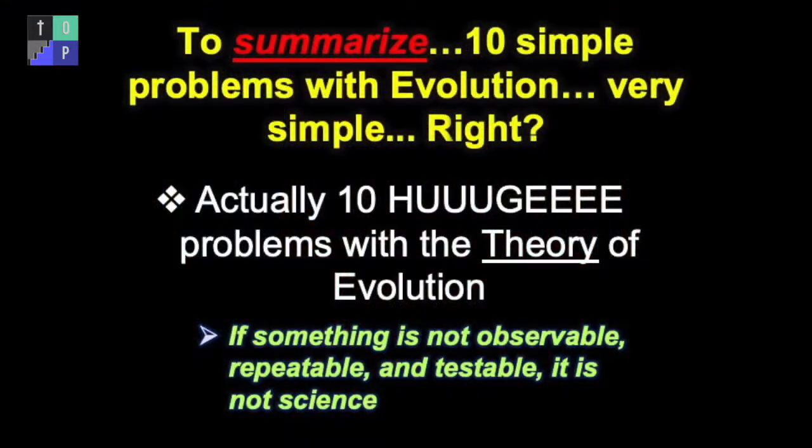We all remember the scientific method from 7th grade. Something has to be observable, testable, and repeatable before we can do an experiment on it. If it's not observable, repeatable, or testable, it is not science — it's just thoughts. With that said, here are 10 simple — actually not so simple — problems with evolution, things they will never tell you about.